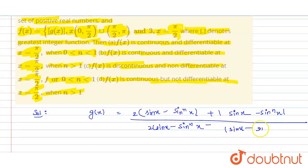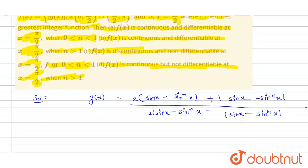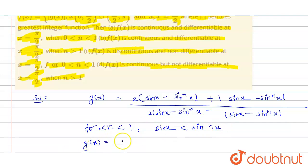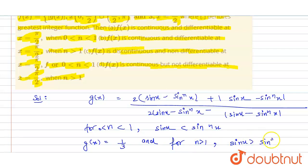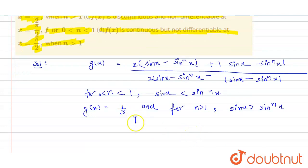For n belonging to (0, 1), we have sin(x) < sin(nx), so g(x) equals 1/3. For n greater than 1, we get that sin(x) > sin(nx), and from this condition we get g(x) equals 3.